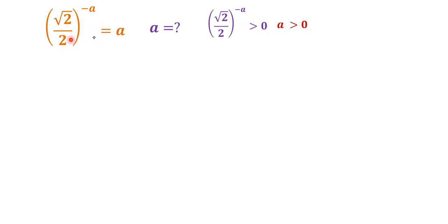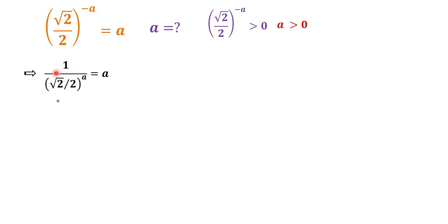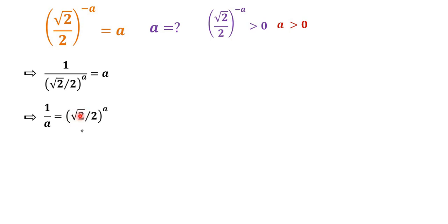Going back to the equation, the power is negative a, so we can make this a fraction where the power will be a in the denominator. So it is 1 over (square root 2 over 2) to the power of a, equal to a. Then we rearrange: move a to the denominator, giving us 1 over a is equal to (square root 2 over 2) to the power of a.